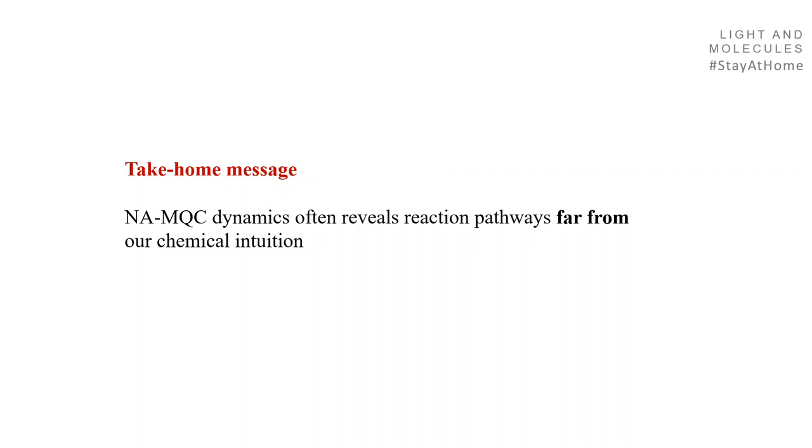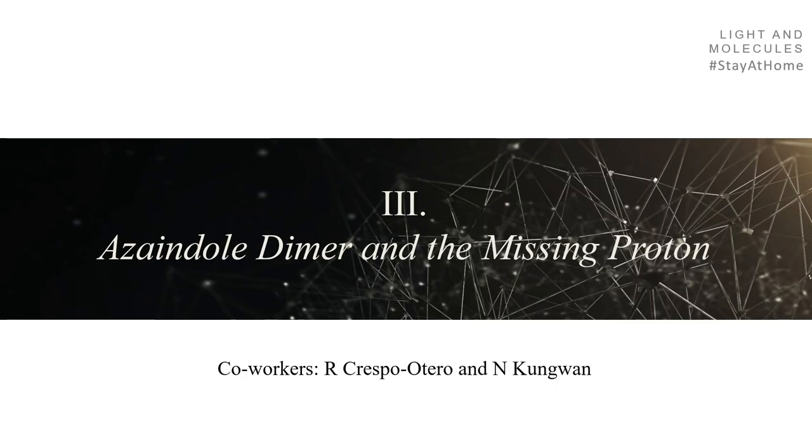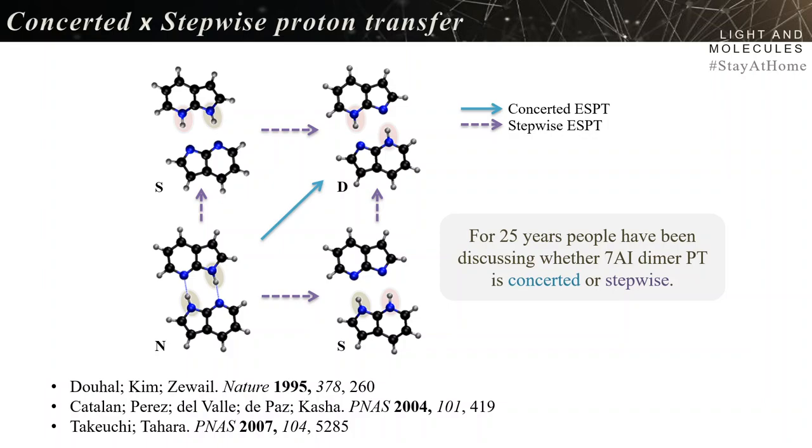Third case: azaindole dimer and a missing proton. This is a collaboration with Rachel Crespo-Otero and Nawee Kungwan. They brought this problem to our attention. It was a classic problem in ultrafast photochemistry with this dimer of azaindole. After excitation, you have experimentally a double proton transfer. The debate was whether this proton transfer was concerted with both protons going at the same time, or stepwise with one proton then the other.